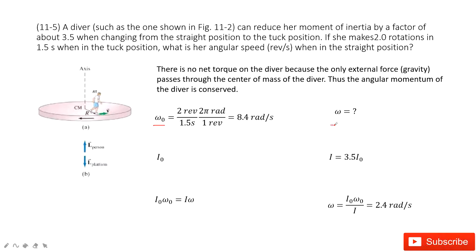And the final angular velocity, we want to find it. And the initial moment of inertia is I0. And we know the final moment of inertia is 3.5 times the I0.